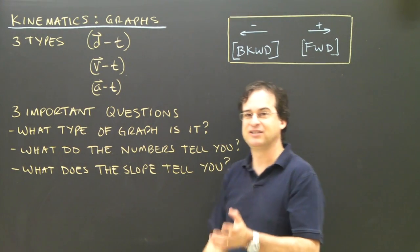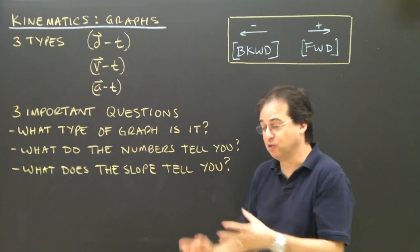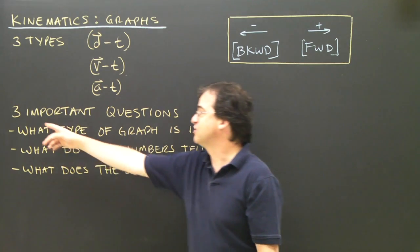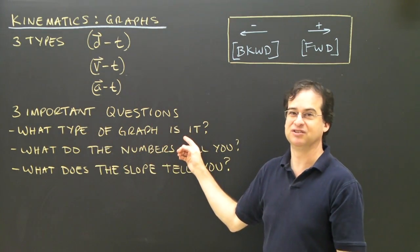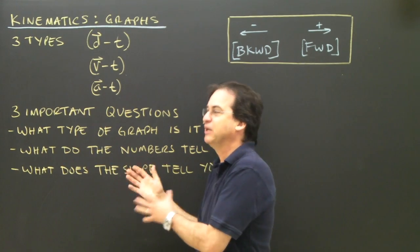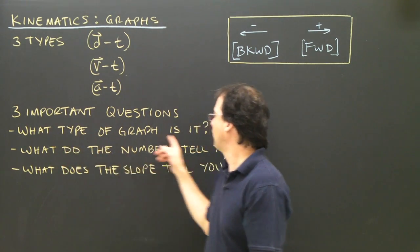Now our goal is to do some calculations with the graphs, but also to be able to describe, looking at a graph, what an object is doing. And one of the ways we can do that is to ask ourselves three important questions. When you ask these questions and answer them, you will have an explanation of what the object's doing in the graph. The first question is, what type of graph is it?